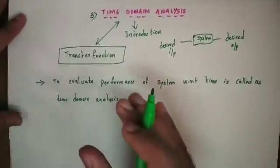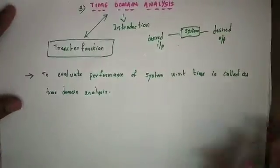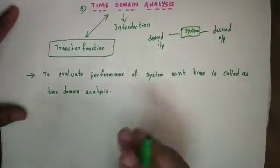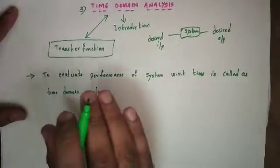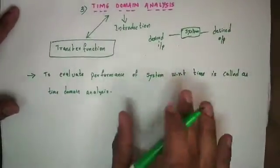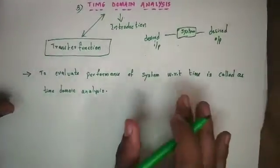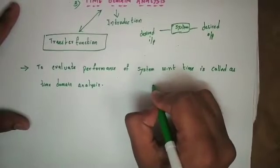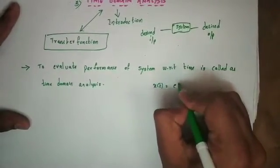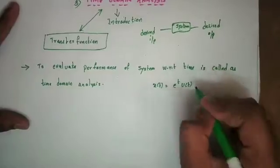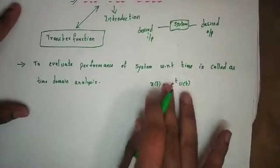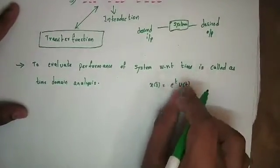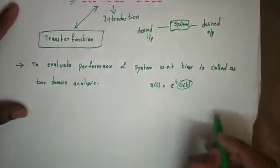We will talk about the time domain analysis. First, we will talk about the network theory. In the network theory introduction, if you choose the network theory, we will correlate it with the control system. We will talk about the exponential function: x equals e^t · u(t). U(t) indicates only for positive values of time. Here we can see the response — the function u(t) for positive values of time.